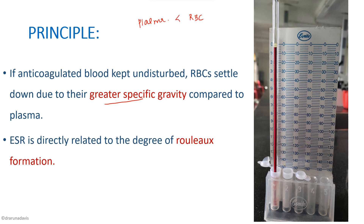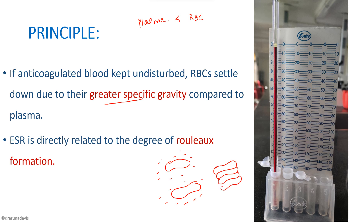Another point is that RBCs have a slight negative charge around them when inside the body, which causes two RBCs to repel each other, helping in laminar flow. When taken outside the body, this negative charge is abolished and they tend to form stacks of RBCs, known as rouleaux formation. Because rouleaux are heavier, they settle down and cause the formation of a clear column of plasma on top.